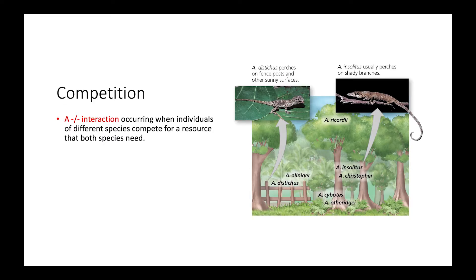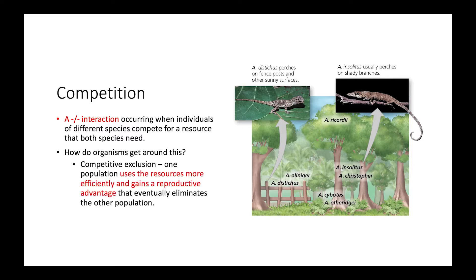First, let's look at competition. Competition is a minus-minus interaction, meaning both organisms involved are negatively affected. Individuals of different species compete for a resource that both need. There are a couple of ways organisms can get around competition. One is competitive exclusion, where one population uses the resource more effectively, gaining a reproductive advantage and eventually eliminating the other population in that region. Another is resource partitioning, where species divide resources so each can survive in the same area.